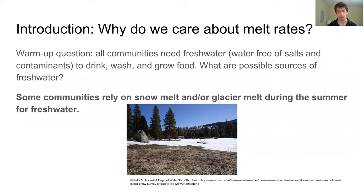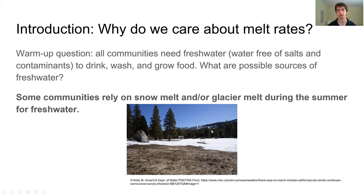For purposes of this lesson, if you don't know what a glacier is, you can just think about snowpacks. What I want to highlight is that for some communities — maybe your community, maybe not — snowmelt or glacier melt during the summer months is really important for fresh water. The photo here shows an example of a snowfield up in the Sierra Nevada mountains of California. By some estimates, parts of California receive as much as 30% of their water for the year from melting snows in the summer. So maybe this matters to your community, but it definitely matters to communities around the world.